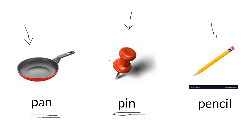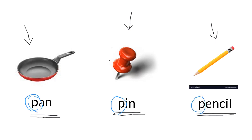And the last picture. Pencil. Pencil. Did you hear the sound P at the beginning of each word? P — Pin. P — Pencil. P — Pan.